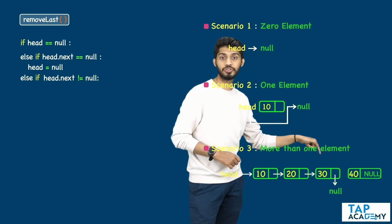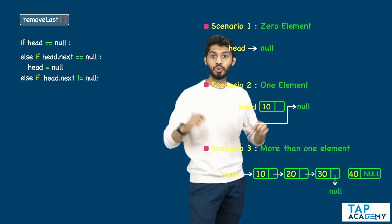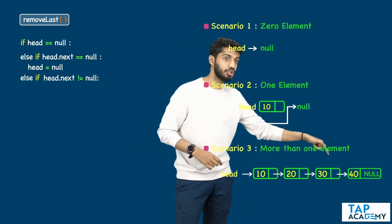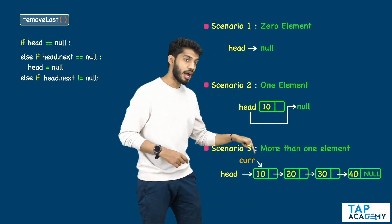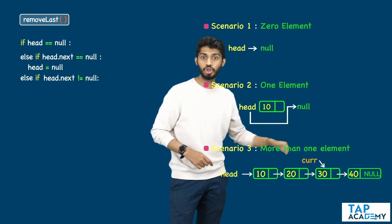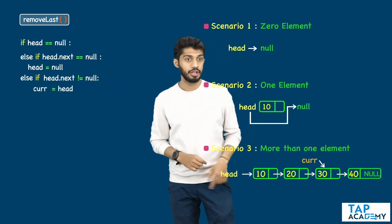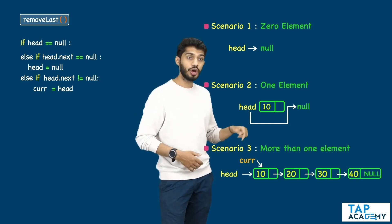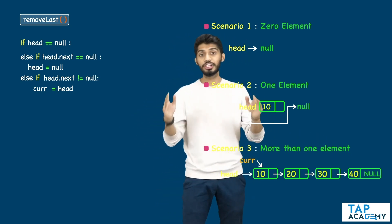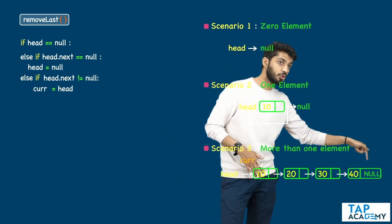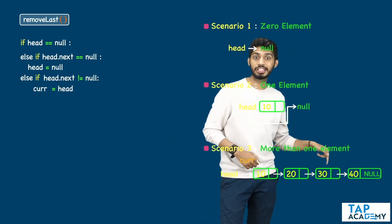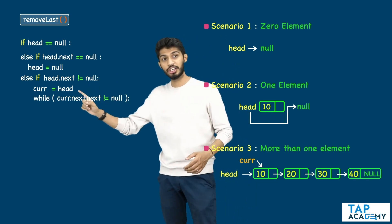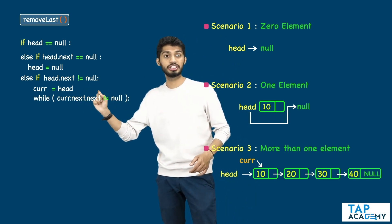How can I get the reference of that node? I will make use of a variable called current. Current will start pointing to the same node where head is pointing to. After that, I need to make sure that current keeps on moving — but it should not move to the last node; rather, it should move to the second-to-last node. To move to the second-to-last node, I will use a while loop: while current.next.next is not equal to null.